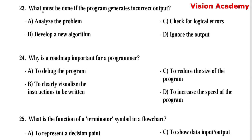Question number 23: What must be done if the program generates incorrect output? Option A, analyze the problem. Option B, develop a new algorithm. Option C, check for logical errors. Option D, ignore the output. Here, option C, check for logical errors, is the right answer.